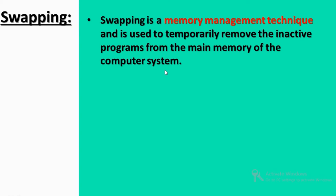So if we have a computer, we have programs, processes, etc. We can run and execute them in the main memory. So in any program, we can execute in the main memory. Secondary memory or other memory devices are also available. In main memory, there are several processes — multiple processes. The other processes in main memory may be temporary or inactive.